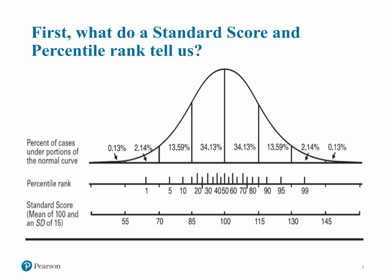Let's start this session by reviewing what information standard scores and percentile ranks provide us. Standard scores have a mean of 100 and a standard deviation of 15. Half of the population, given age or grade, will score 100. They are also equal interval, meaning that a difference between standard scores is comparable on any point of the continuum.